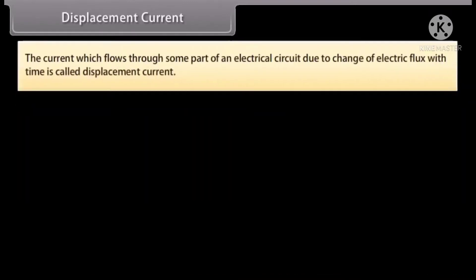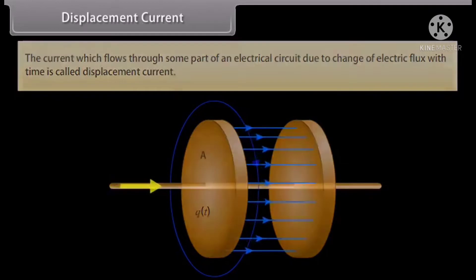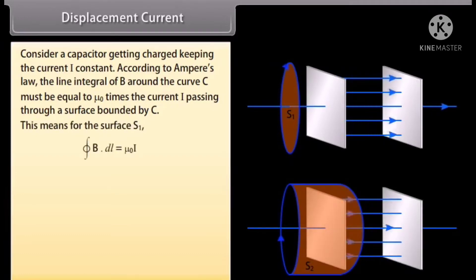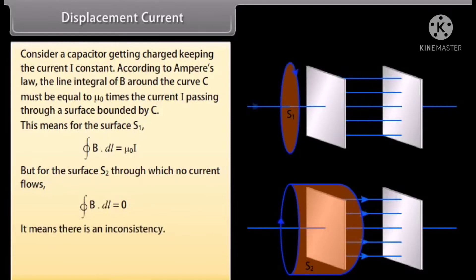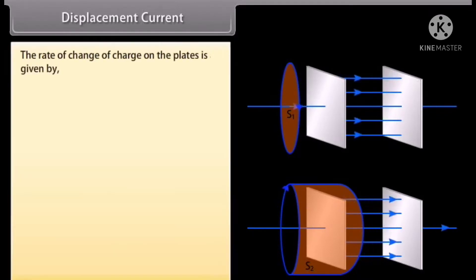Displacement current: The current which flows through some part of an electrical circuit due to change of electrical flux with time is called displacement current. Consider a capacitor getting charged keeping the current I constant. According to Ampere's law, the line integral of B around the curve C must be equal to mu_0 times the current I passing through a surface bounded by C.